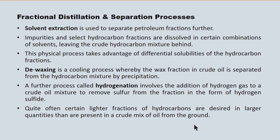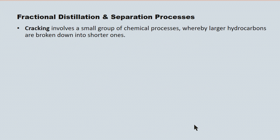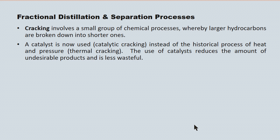Quite often certain components of a hydrocarbon fraction are more desirable than others. There are two complementary processes called cracking and reformation that we use to increase the yield of the more desirable components. Cracking involves a group of chemical processes whereby large hydrocarbons are broken down into shorter ones. Historically we used heat and pressure — a thermal cracking process — but we've now replaced that with a catalytic cracking process.